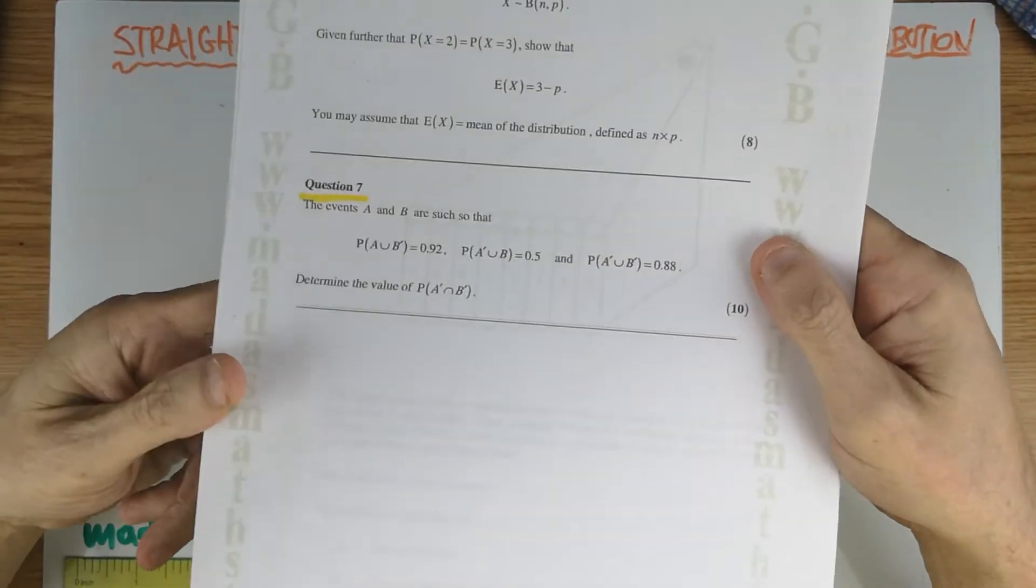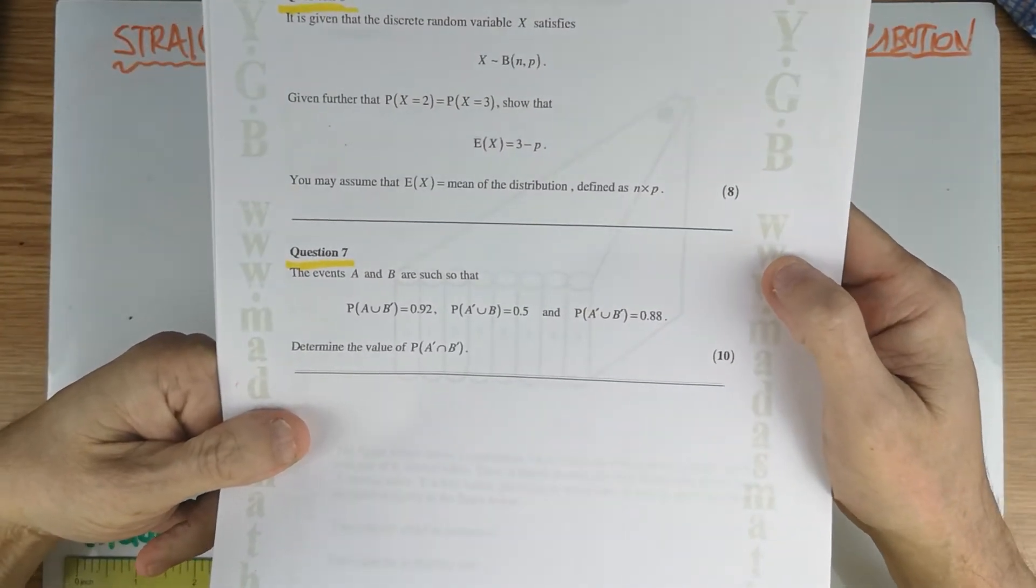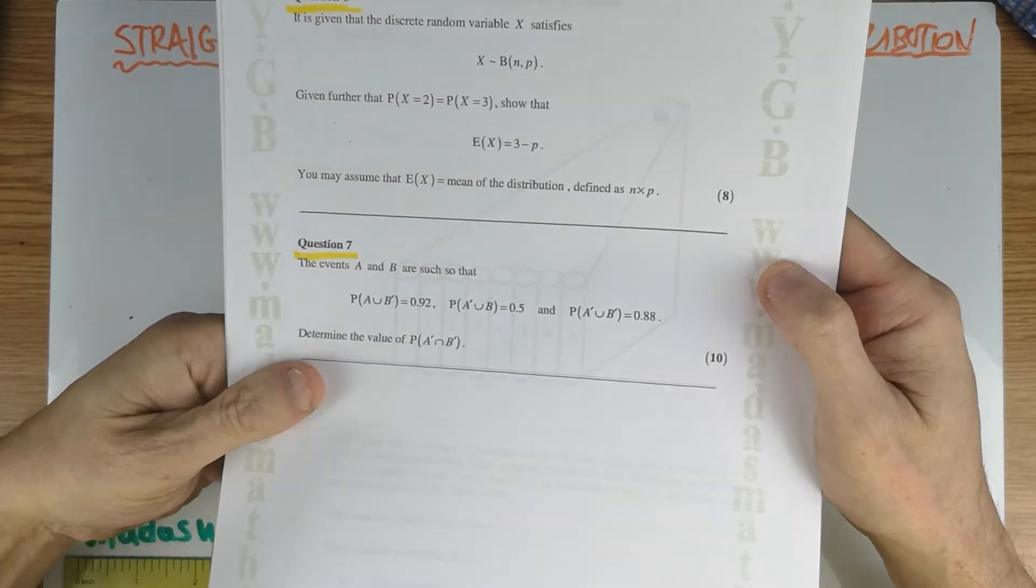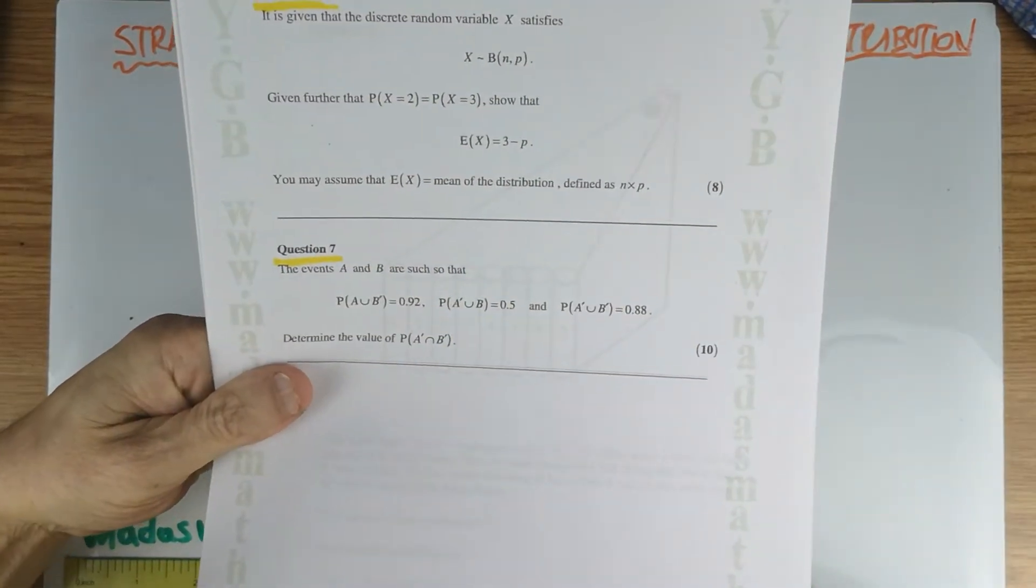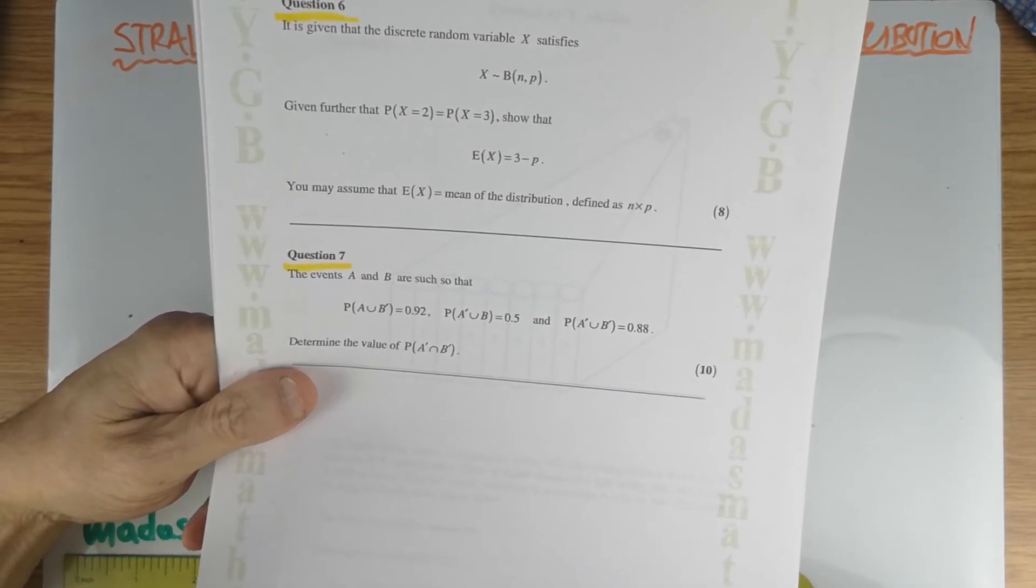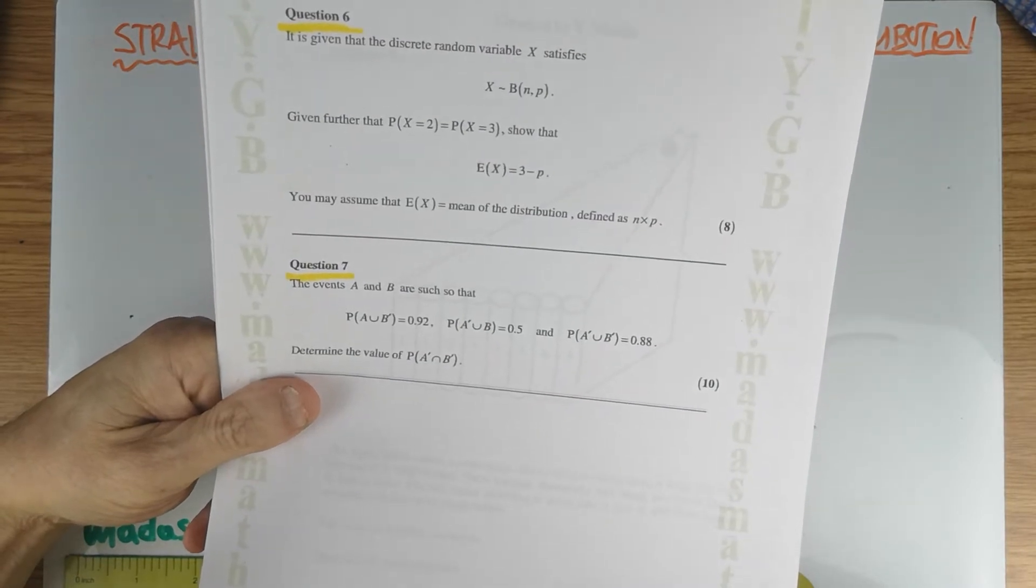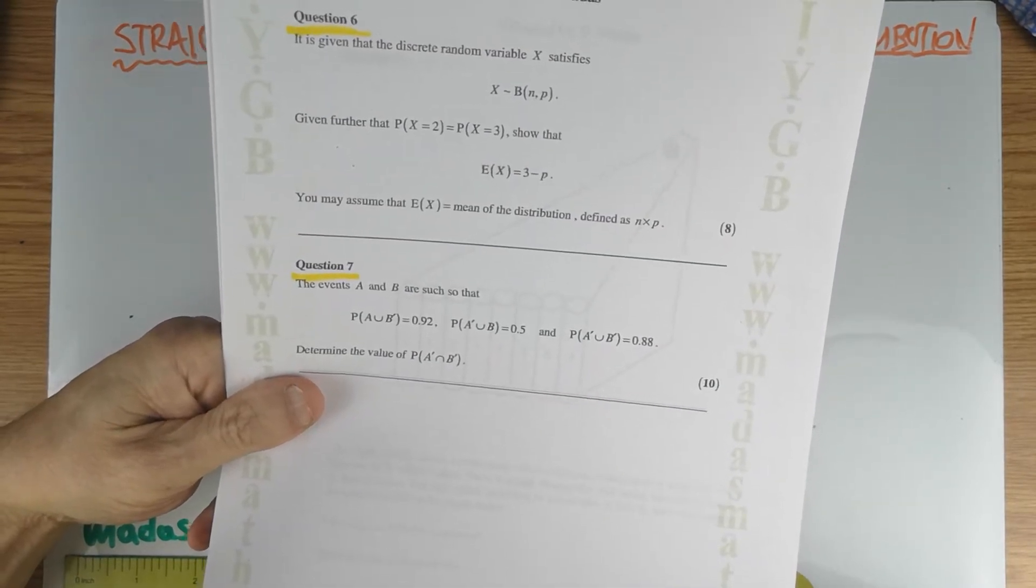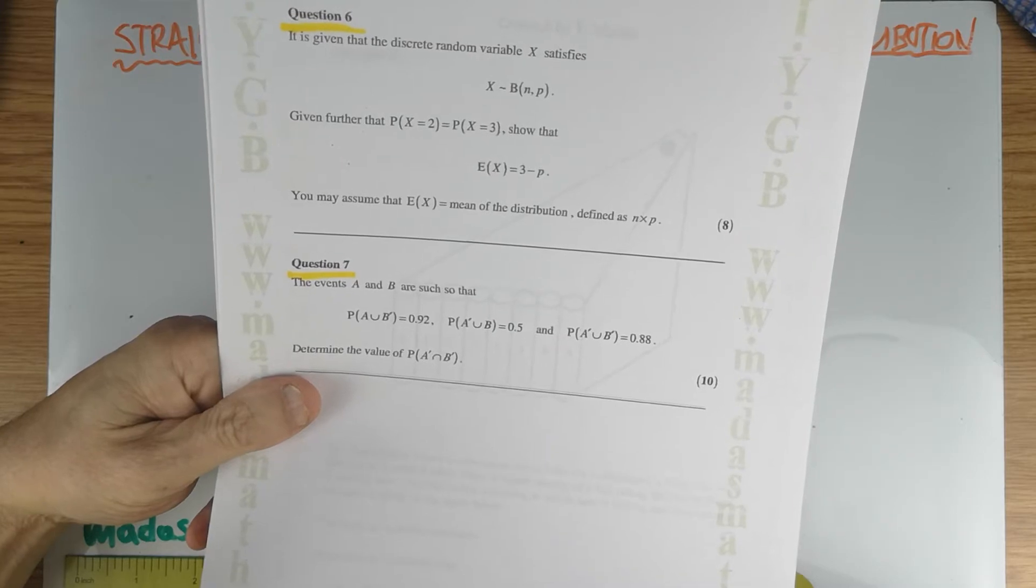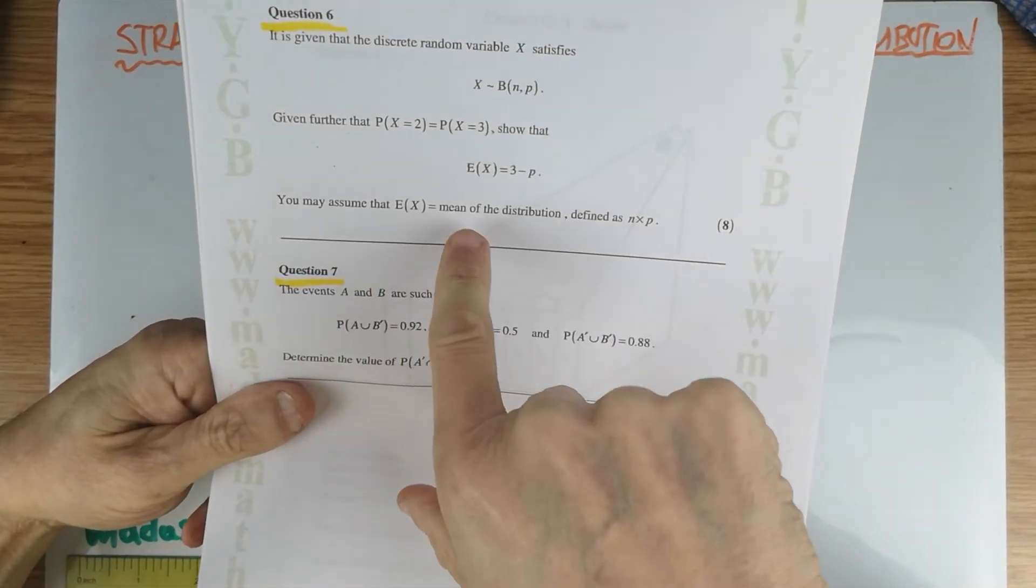It is given the discrete random variable X satisfies X having a binomial distribution with n trials and p probability of success. If the probability of X equal to two is the same as the probability of X is equal to three, show that the expectation of X is three minus p. And it says you may assume expectation of X is the mean of the distribution defined as n times p.